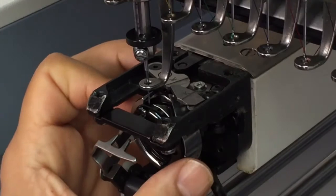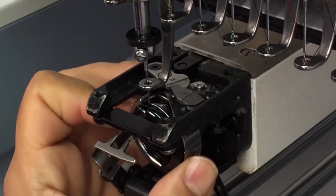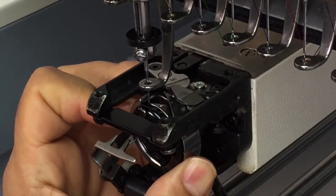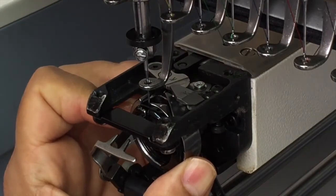Now I will loosen the sticking out screw and reposition the rotary hook to 200 degrees. Then I will tighten up the screw.